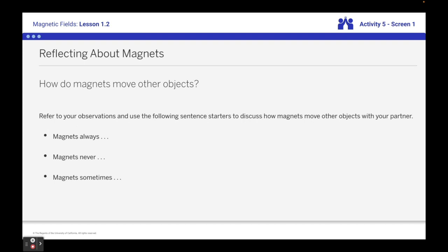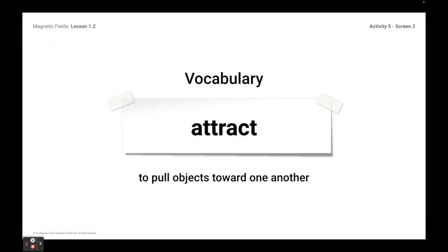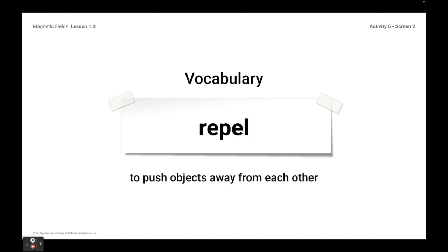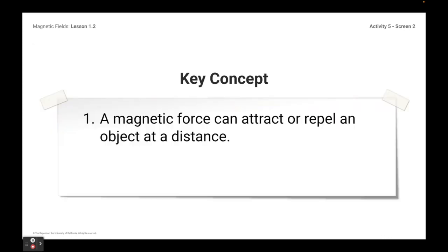Then we're going to try to make some rules about magnets — they always do this or they never do this. For the homework, we're going to try to come up with some agreement about how they work. Some vocabulary words: attract means to pull objects towards one another; repel means to push objects away. We do have a glossary you can access anytime in Amplify, but we'll talk about them more in class. A key concept from this lesson is that a magnetic force can attract or repel an object at a distance.